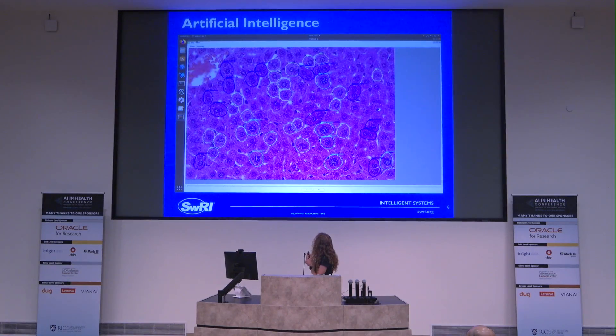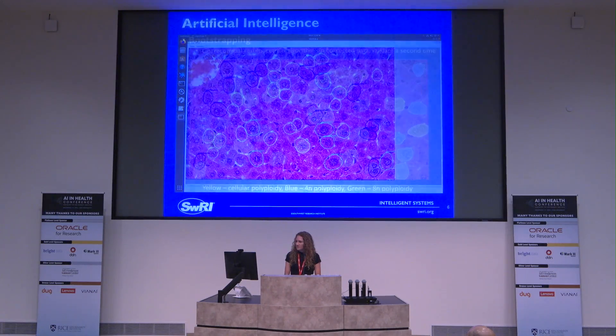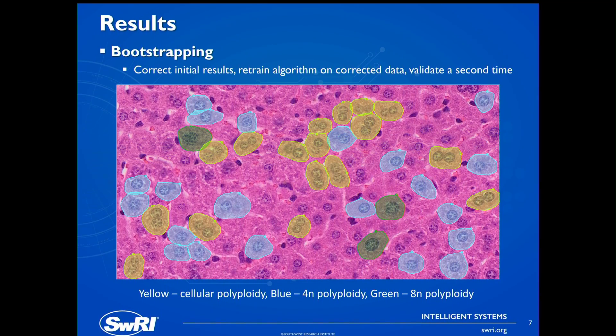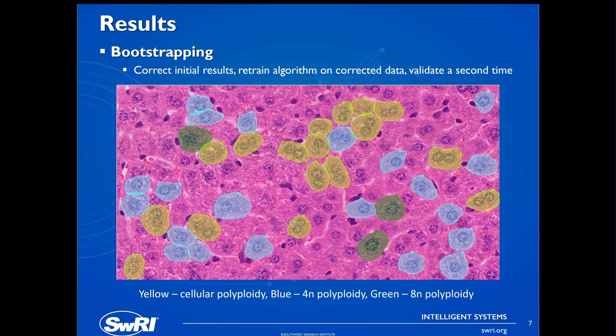After validating on 25 similar images, we decided to try some bootstrapping: we corrected the labels within the PyQT GUI that we created, combined those corrected results with the previous training data, and then retrained the algorithm and validated a second time.